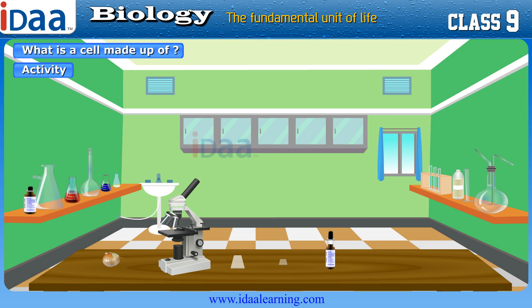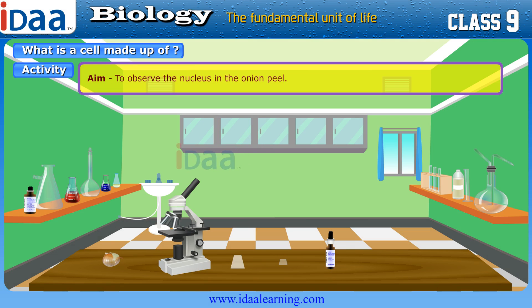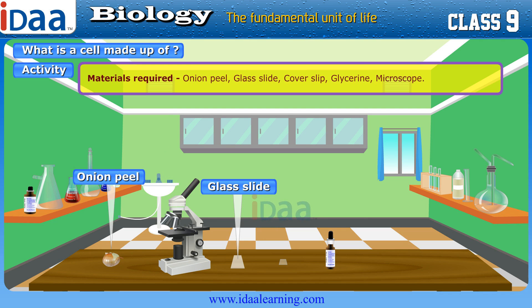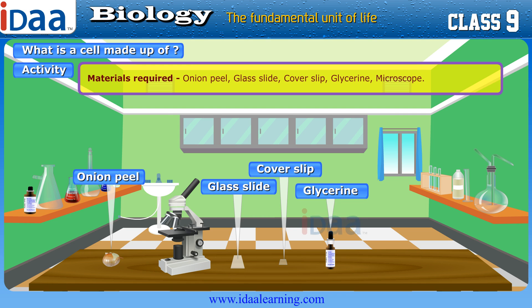Activity: Aim — To observe the nucleus in onion peel. Materials required: onion peel, glass slide, cover slip, glycerine, and microscope.